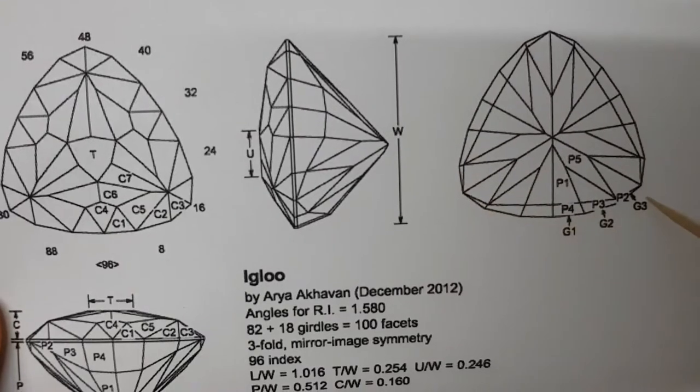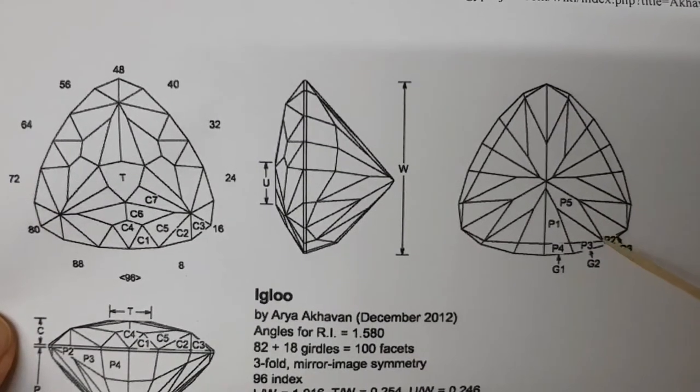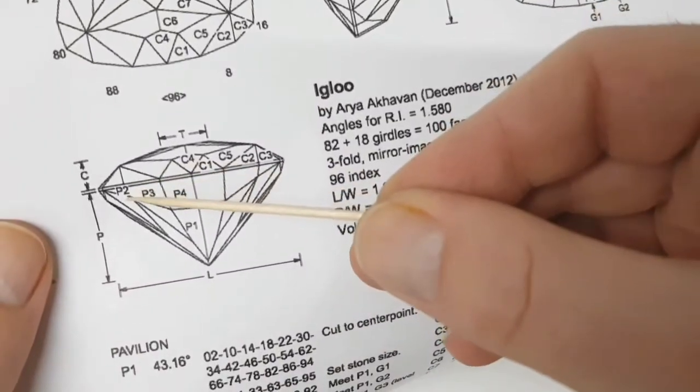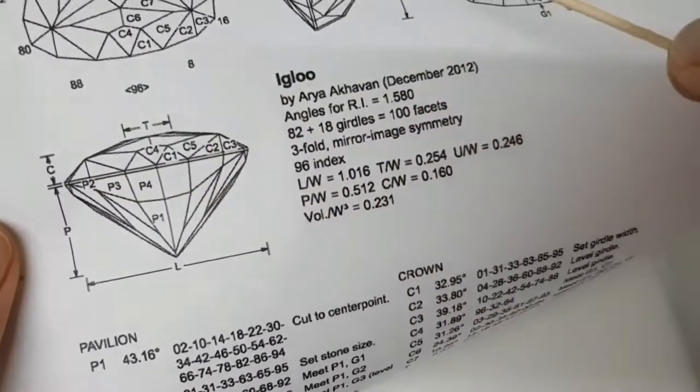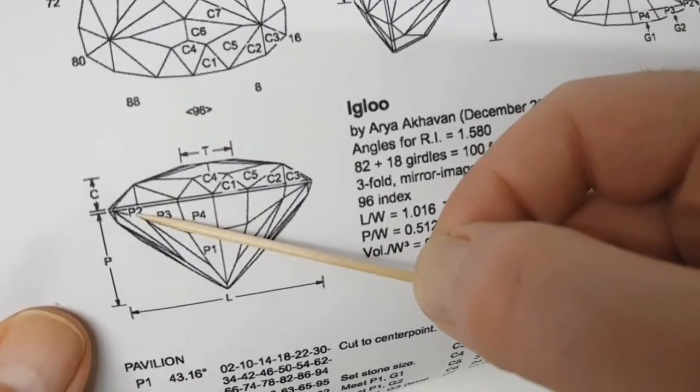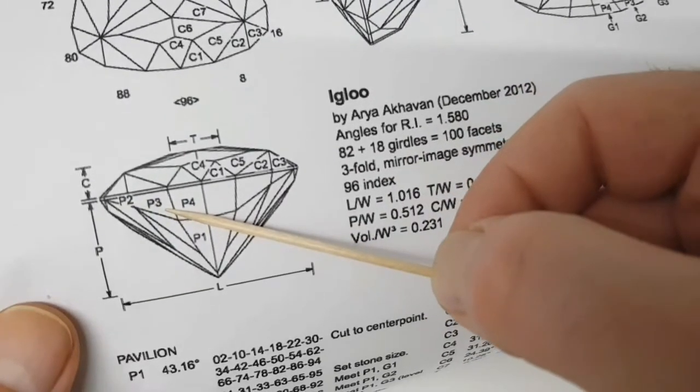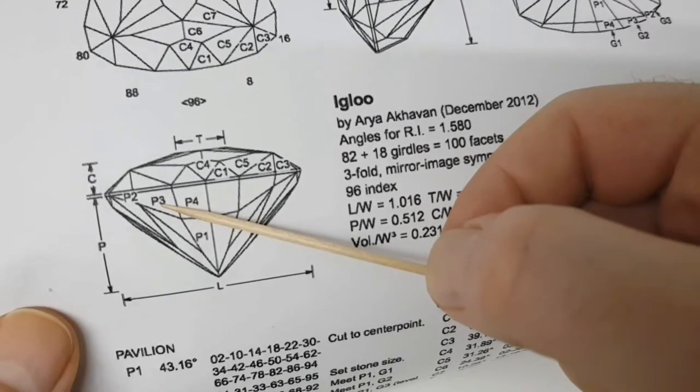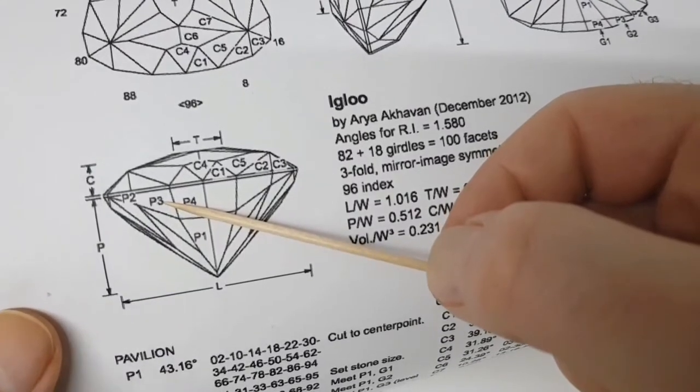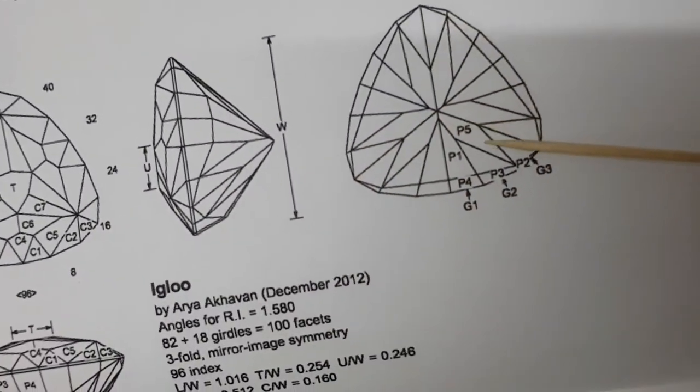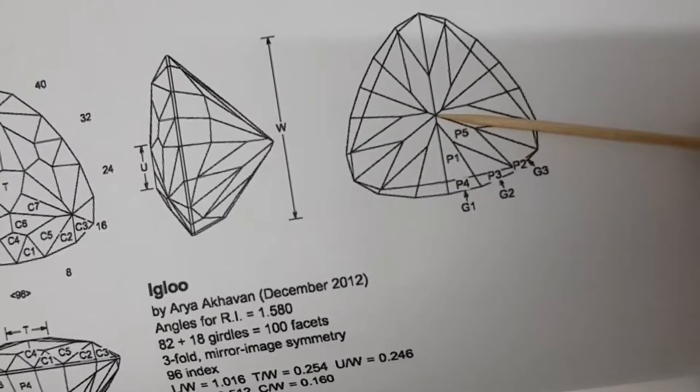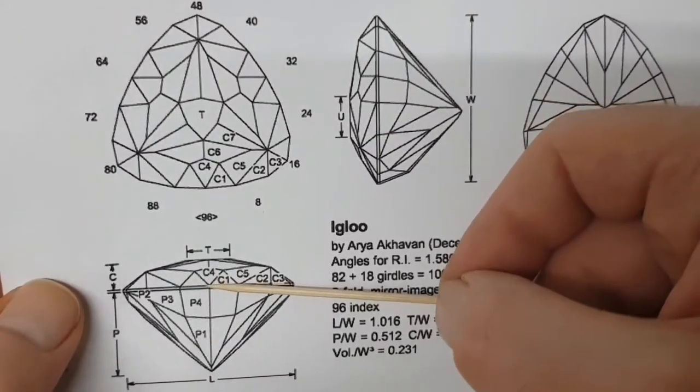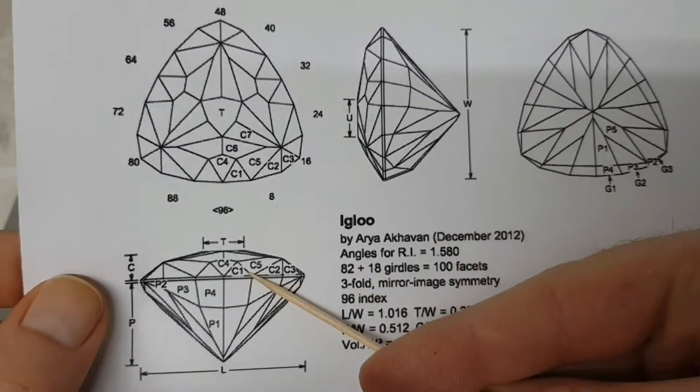After cutting G1, G2, G3, we end up in this shape. We start cutting the P2, which are the first tier of pavilion facets. Here we can see them very good: P2, P3, P4. If you have finished the P2 tier you can change to a finer grit, maybe 1200, maybe 3K, because by starting to cut the P3 tier you don't have to cut away a lot of material. The facets are cut very fast. The last facet is the P5, which creates the PCP, the permanent center point.